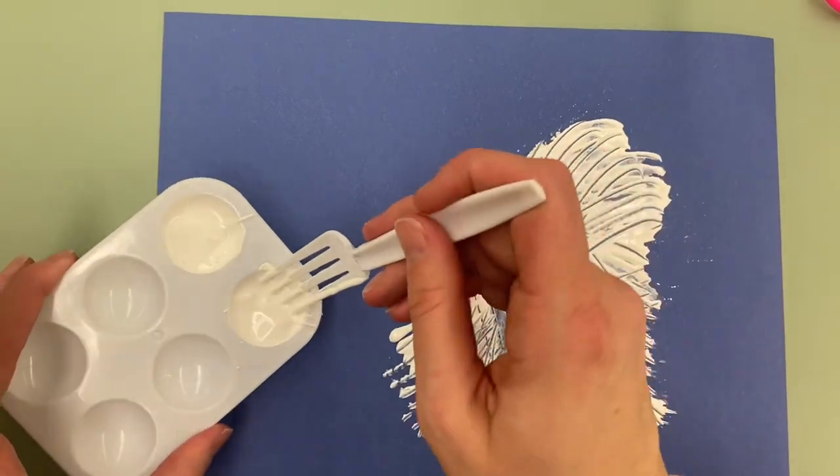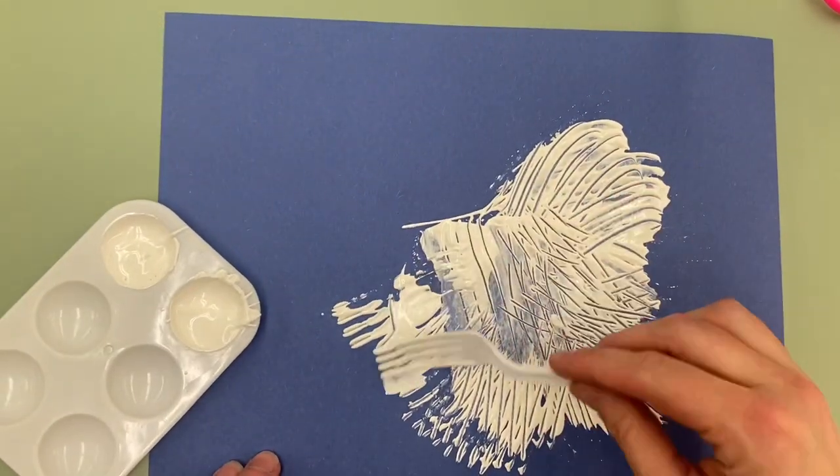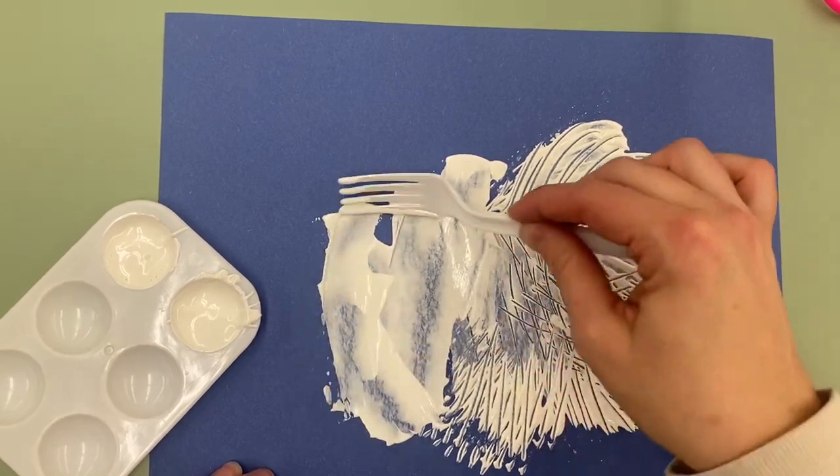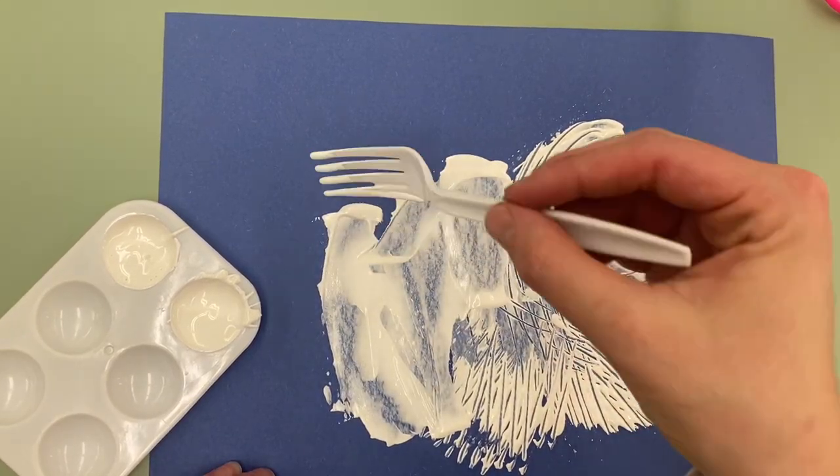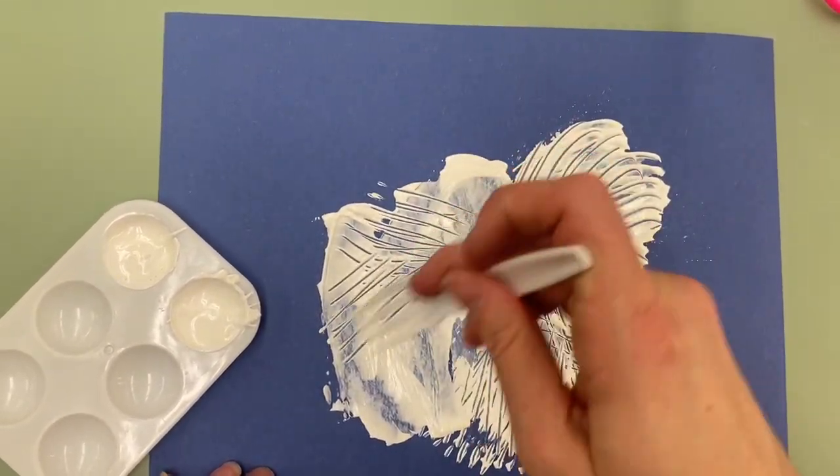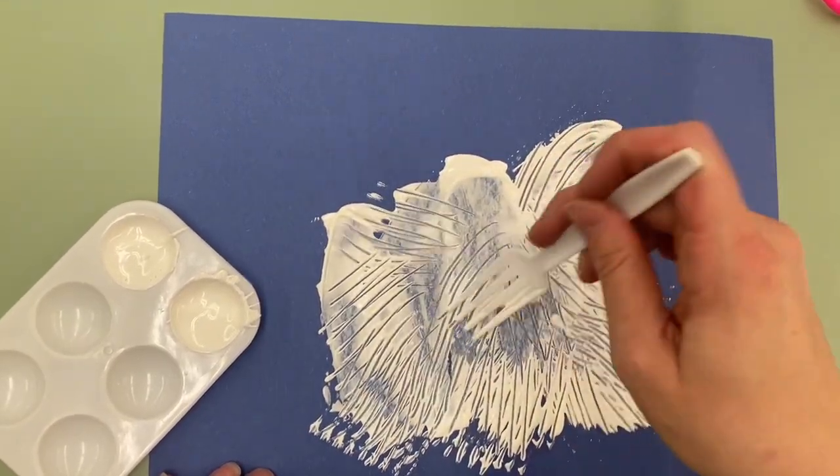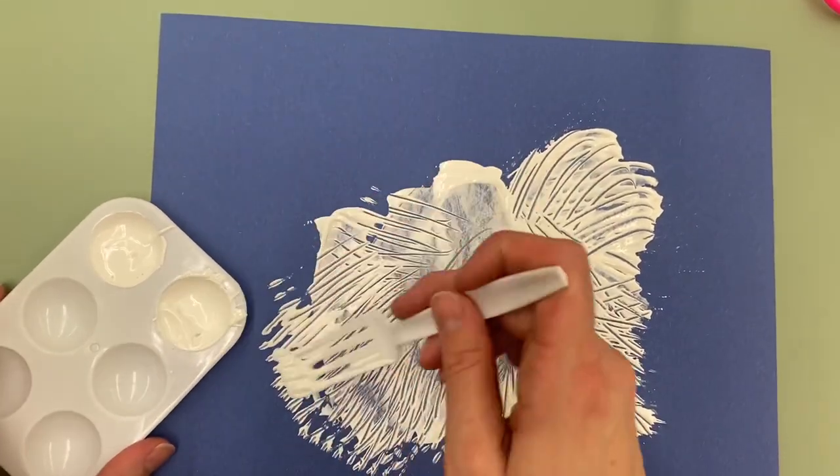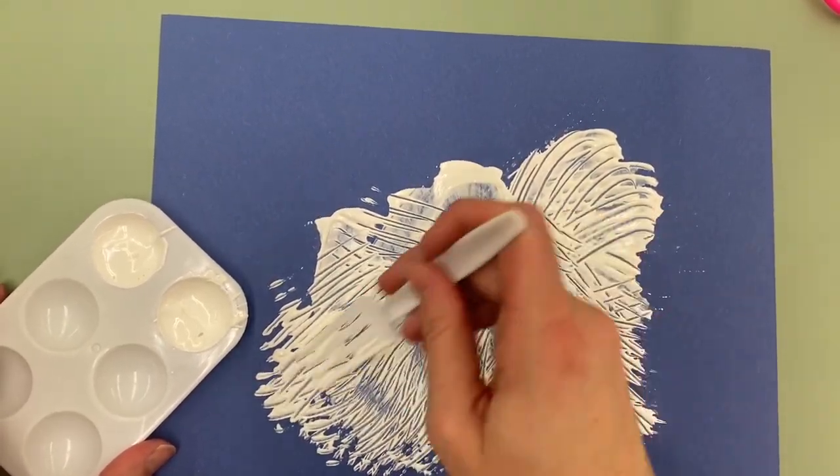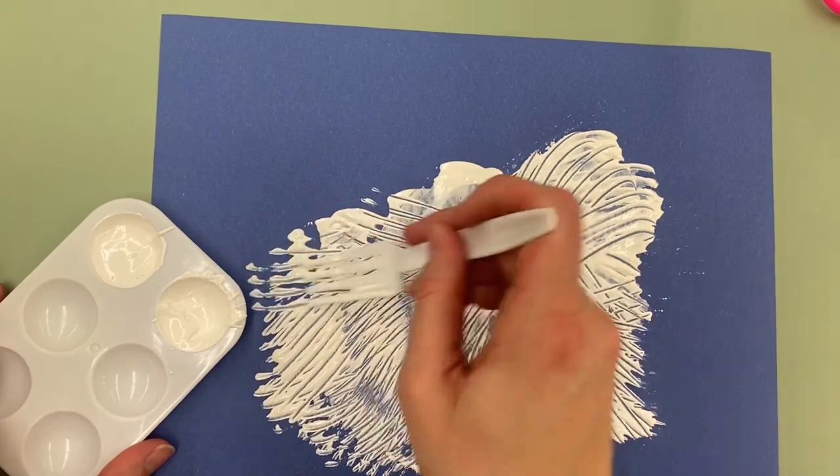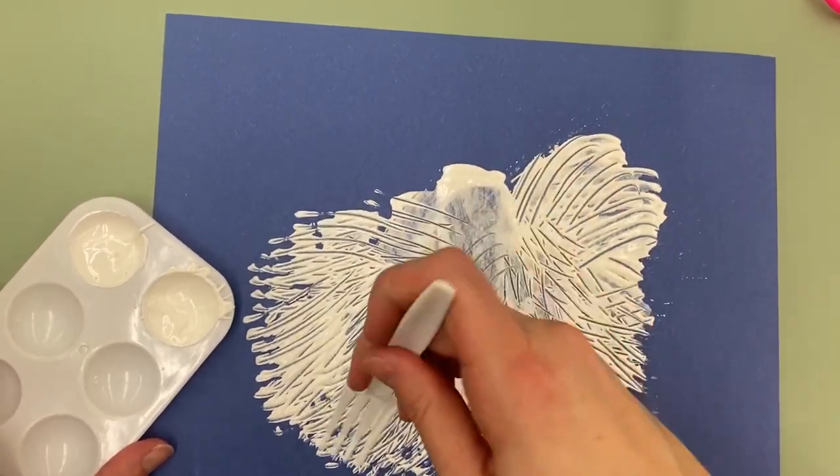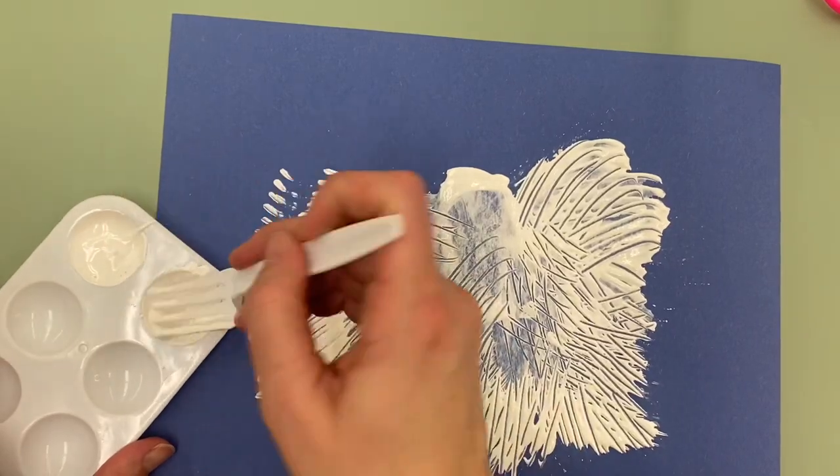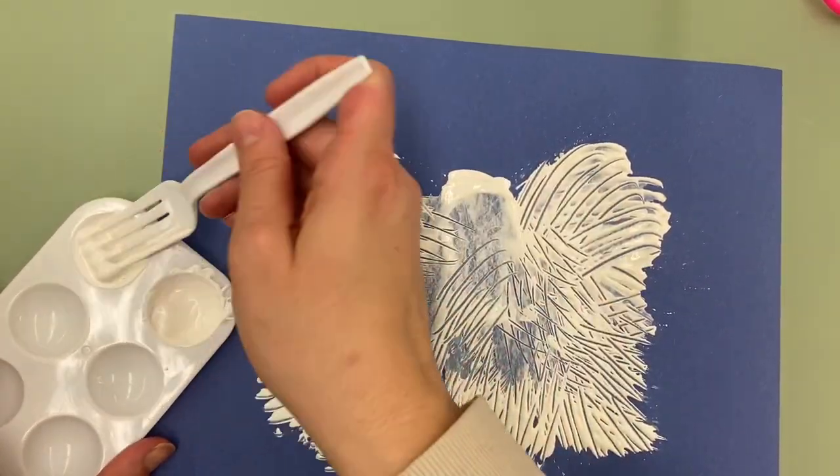I'm gonna get some more on my paper. Kind of like doing it sideways with the fork like this, swish it around my paper. And then I can use the fork to make more marks in it. Who knew a fork could make such cool designs?